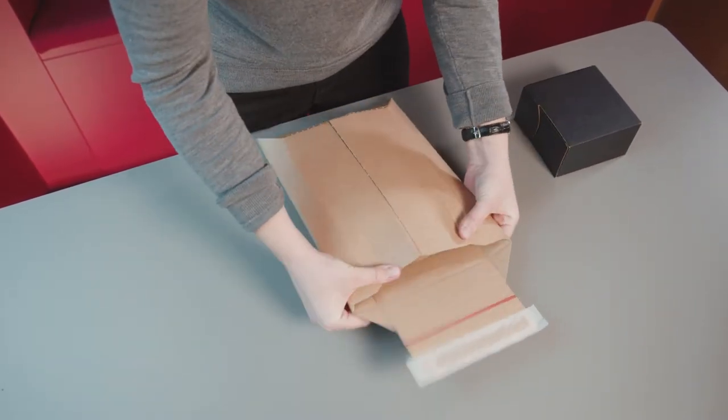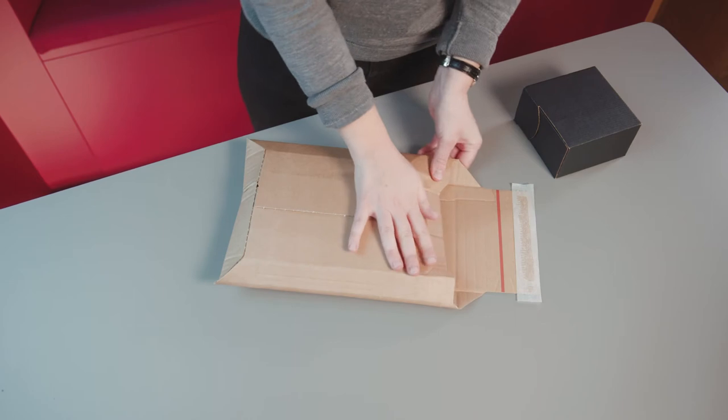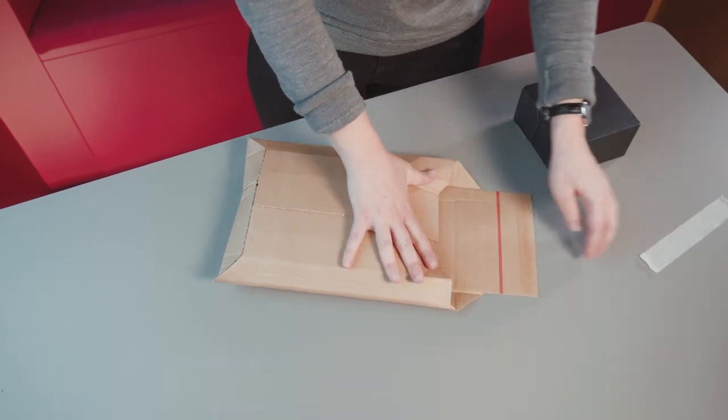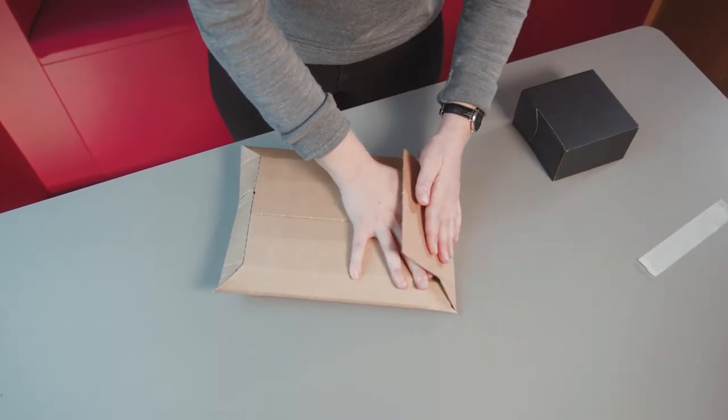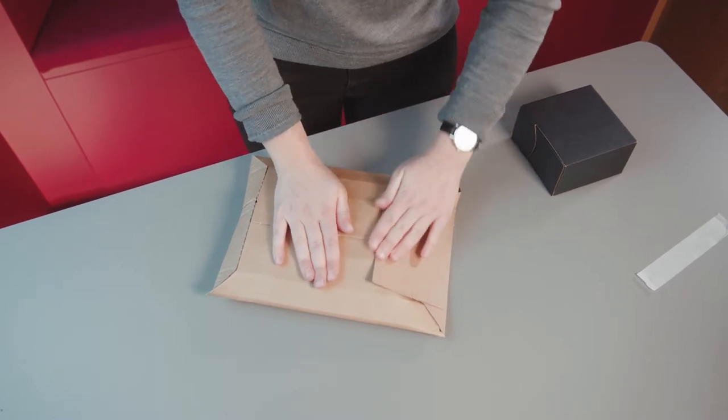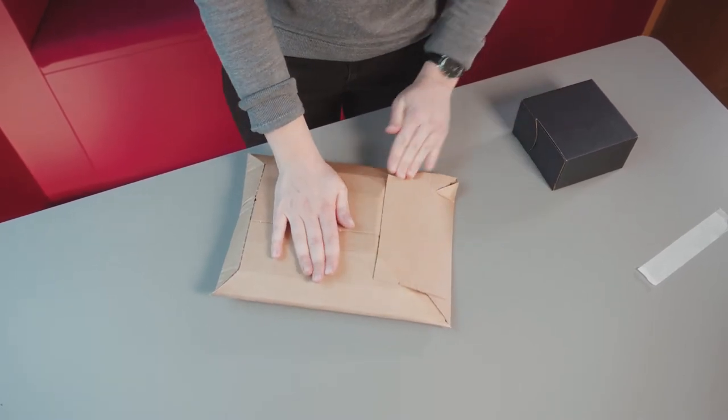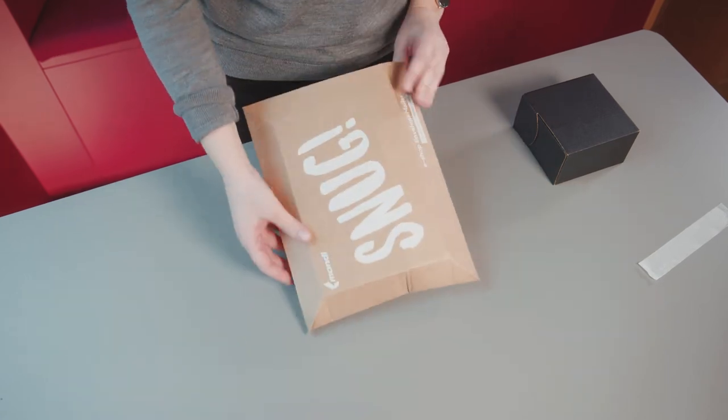And then we close the envelope mailer just like a conventional envelope. Simply fold over the top flap. Make sure it seals properly. And then you have a well protected product inside.